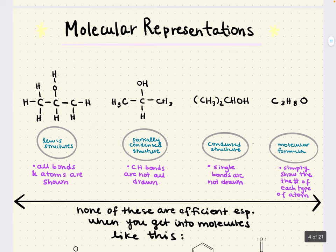Before bondline, chemists used many different styles to draw molecules. We have Lewis structure, which we worked with in chapter one, where all the bonds and atoms are shown and lone pairs are drawn explicitly. In the partially condensed structure, carbon-hydrogen bonds are not all drawn — very common in biochemistry when drawing sugars. In the condensed structure, single bonds are not drawn, so it's more like a sentence. And the molecular formula just tells you the number of each type of atom.